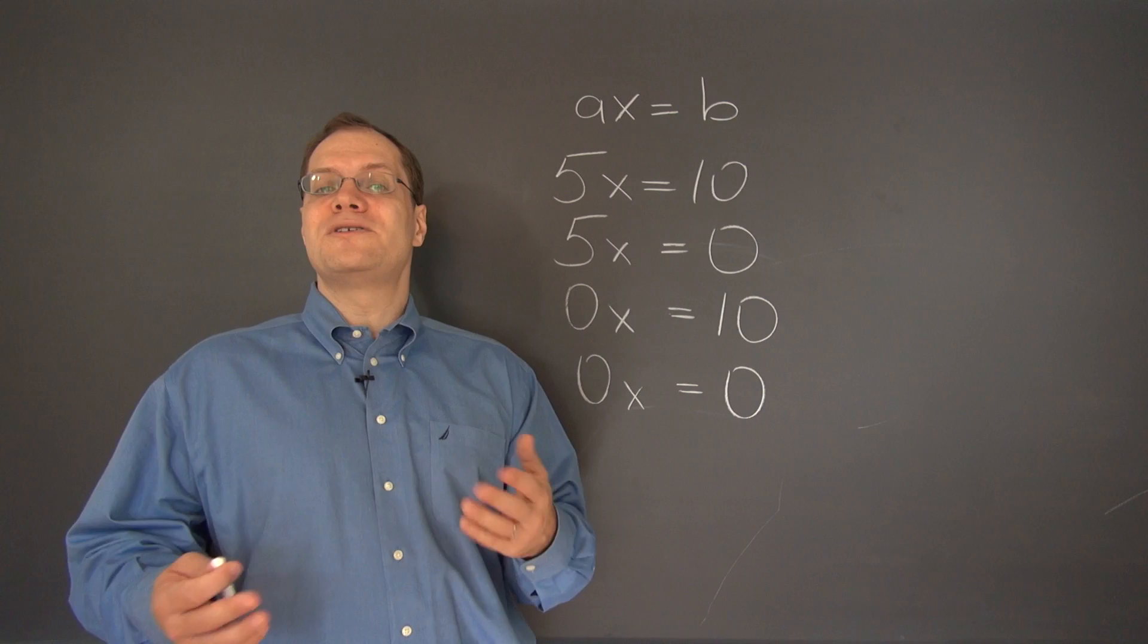Finally moving on to the last case, we see that any number is a solution because 0 times any number is 0, so x can be any number. So just as was expected, there could be none, 1, or infinitely many solutions.